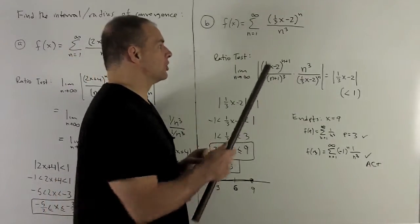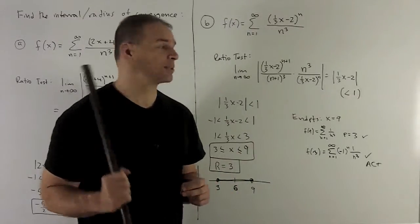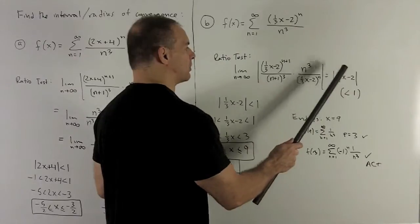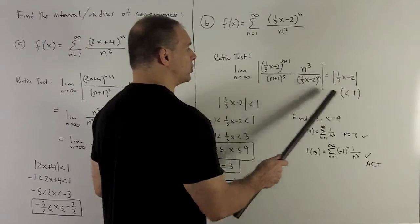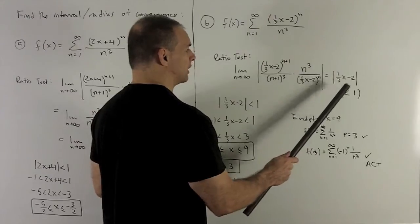And we'll shorten up the work here since dealing with the n cubed will be exactly like we did in the last case. So that's going to leave me with absolute value of 1 third x minus 2. And ratio test is going to say this will converge whenever we're strictly less than 1.